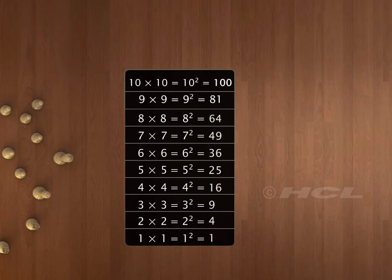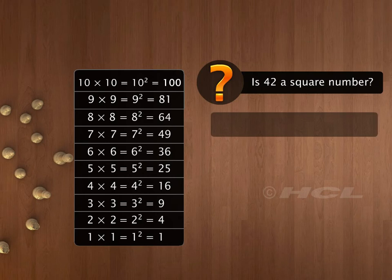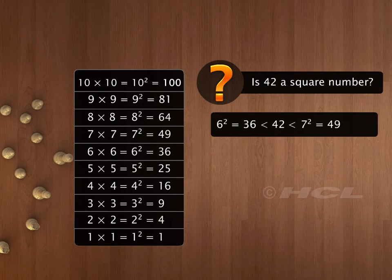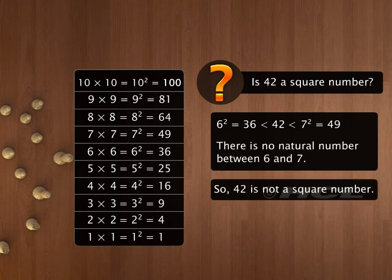Did you notice that not all natural numbers are covered in the list of square numbers till 100? Is 42 a square number? Well, 6² is 36 and 7² is 49. So, if 42 is a square number, then it must be the square of a natural number between 6 and 7. But there is no natural number between 6 and 7. So, 42 is not a square number.